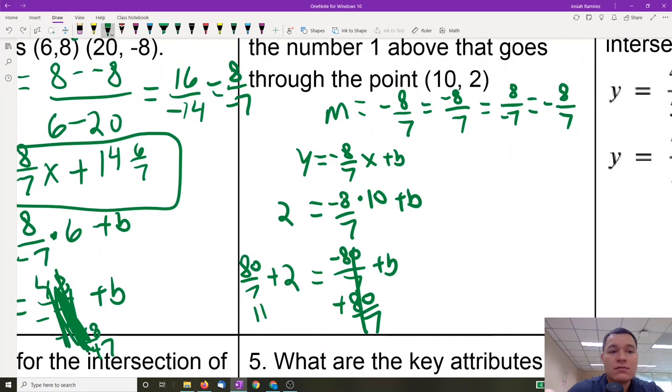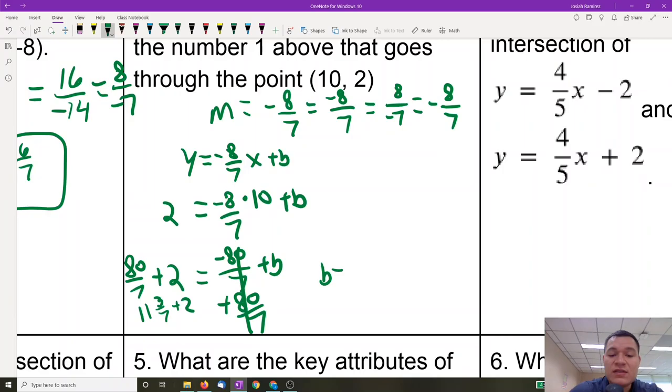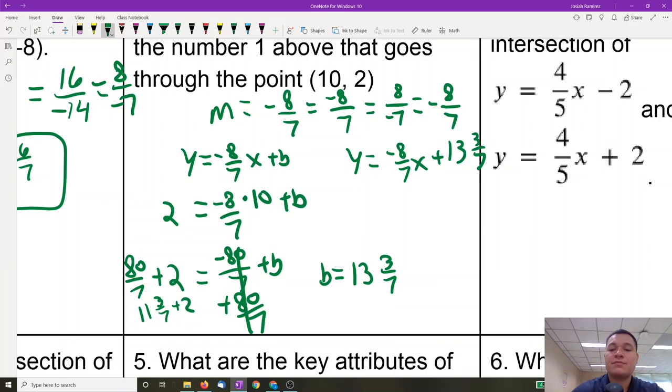11 and 3 sevenths plus 2. You add the whole numbers together, that's 13 and 3 sevenths. b is equal to 13 and 3 sevenths. So my y is equal to negative 8 sevenths times x plus 13 and 3 sevenths. Done.